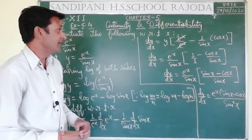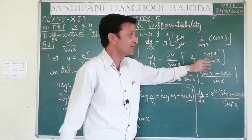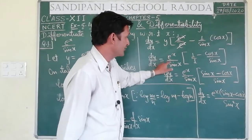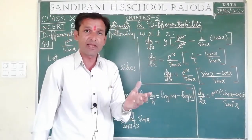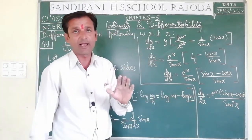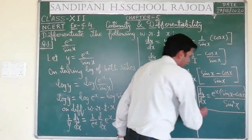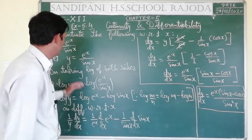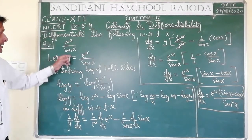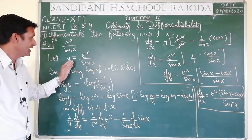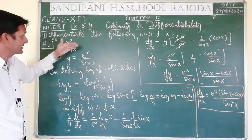एक और बात: ऐसा जरूरी नहीं कि आपका हर case में answer match करवाना हो। अगर cos x/sin x को cot x भी लिख सकते थे — तब भी answer सही होता: e^x/sin x · (1 - cot x). Trigonometry का कोई सा formula apply होता है तो लगाते हैं — if answer से match नहीं करता, it doesn't matter. यहाँ dy/dx जो आ रहा है वो हमारे पिछले answer से match कर रहा है — this answer is correct. So in this manner I have told you how to use the log for any function.